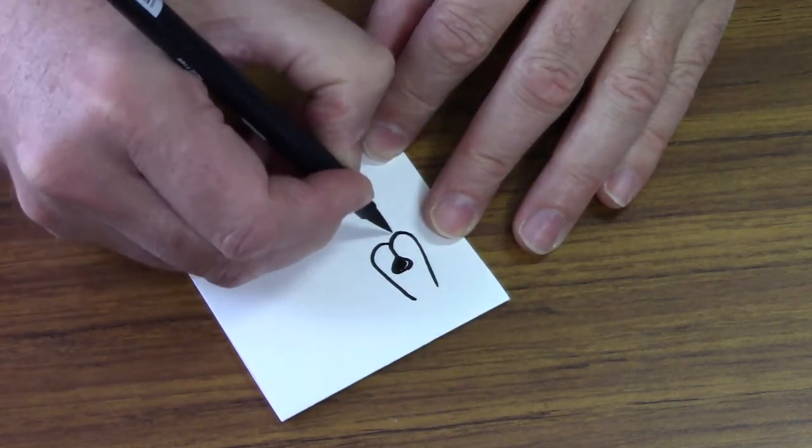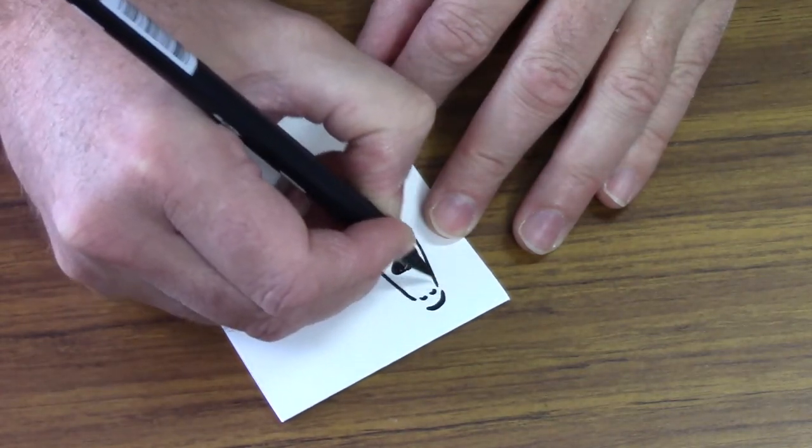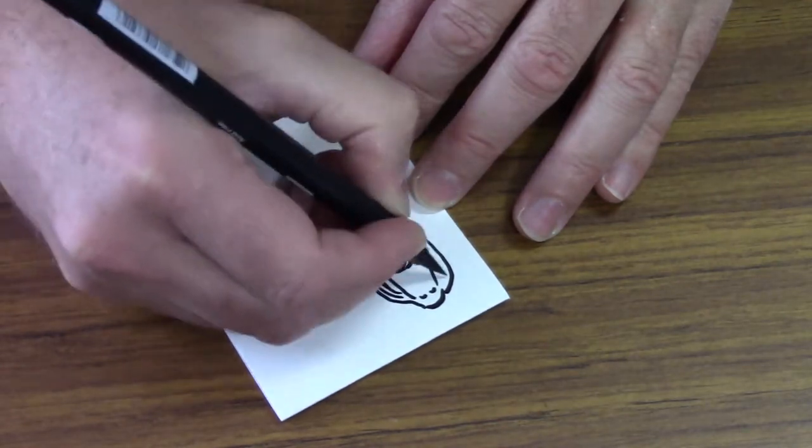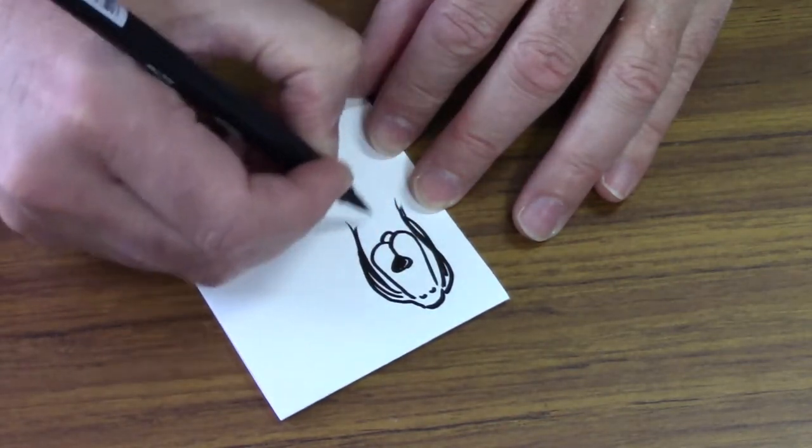So I take a scrap piece of paper and I just draw their breed of dog right on this scrap piece of paper. And I'll thank them for their purchase.